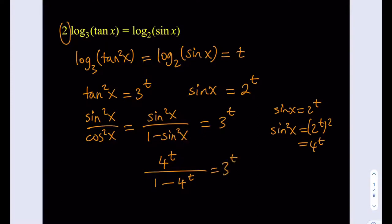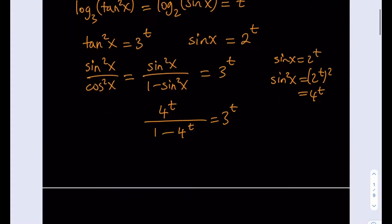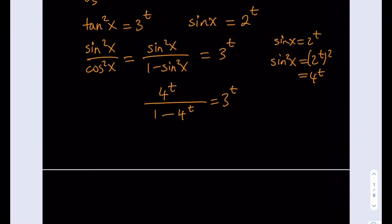Now we have an equation in one variable, which is pretty good. Even though the bases are different, we're going to take care of this. Let's cross multiply this expression first. We're going to be getting 4 to the power t equals 3 to the power t multiplied by 1 minus 4 to the power t times 3 to the power t, which is going to be 12 to the power t.